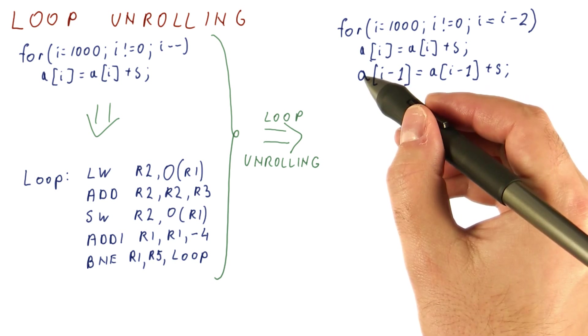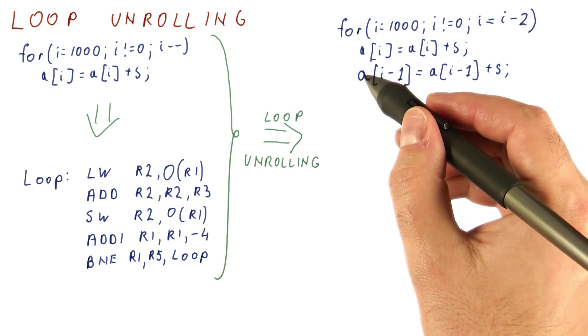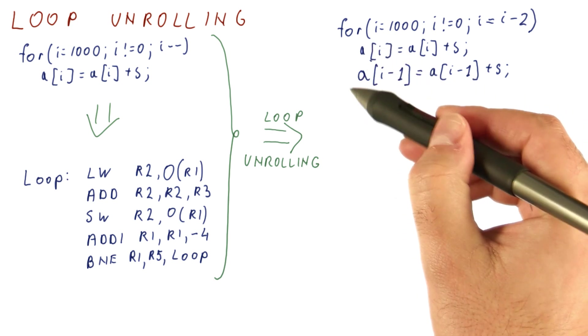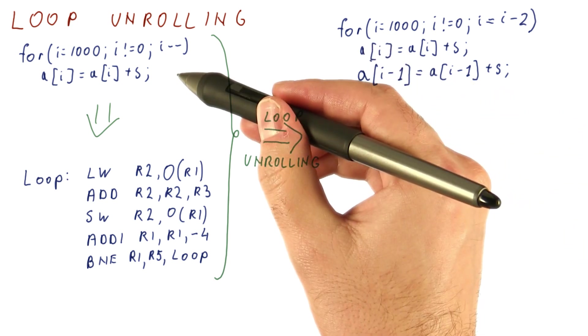We could unroll the loop more than once. For example, unrolling two times would mean that this loop is doing now three times the work of the original iteration.